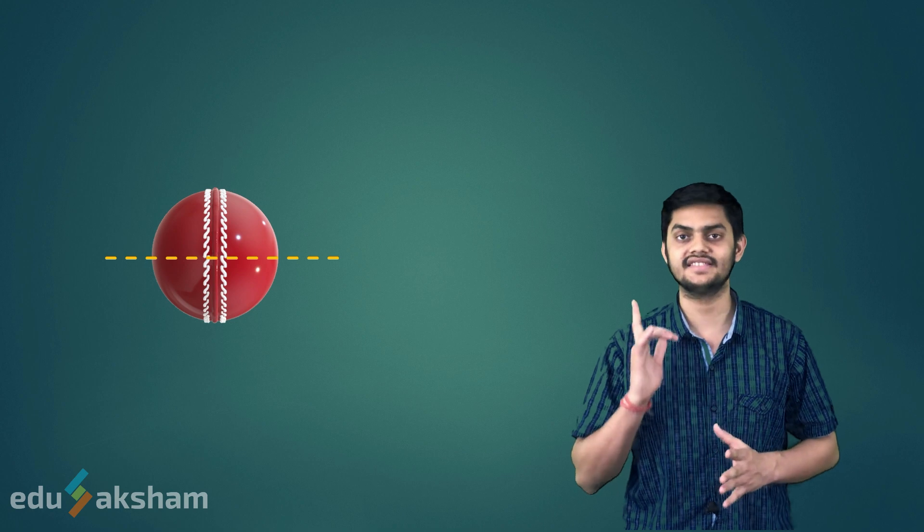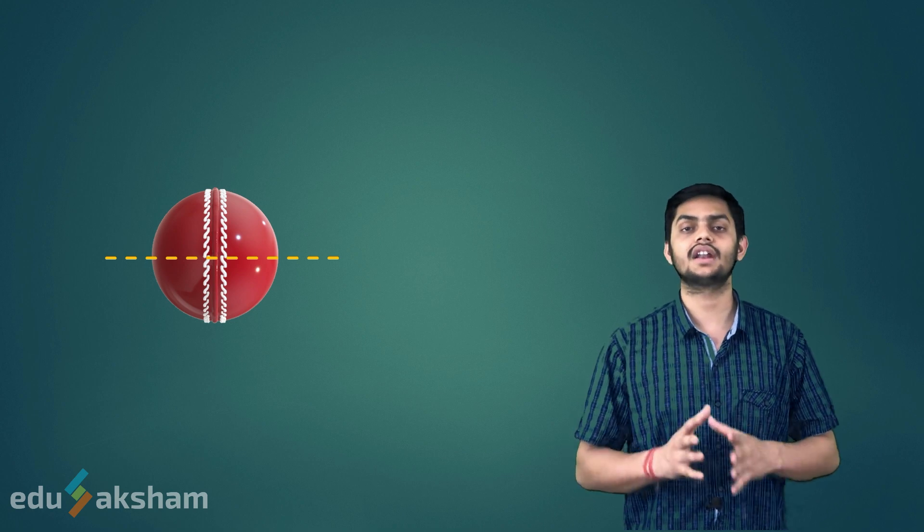Similarly, the cricket ball is symmetrical about a line passing through its seam. The other line of symmetry is this. There are no other lines of symmetry for this cricket ball.